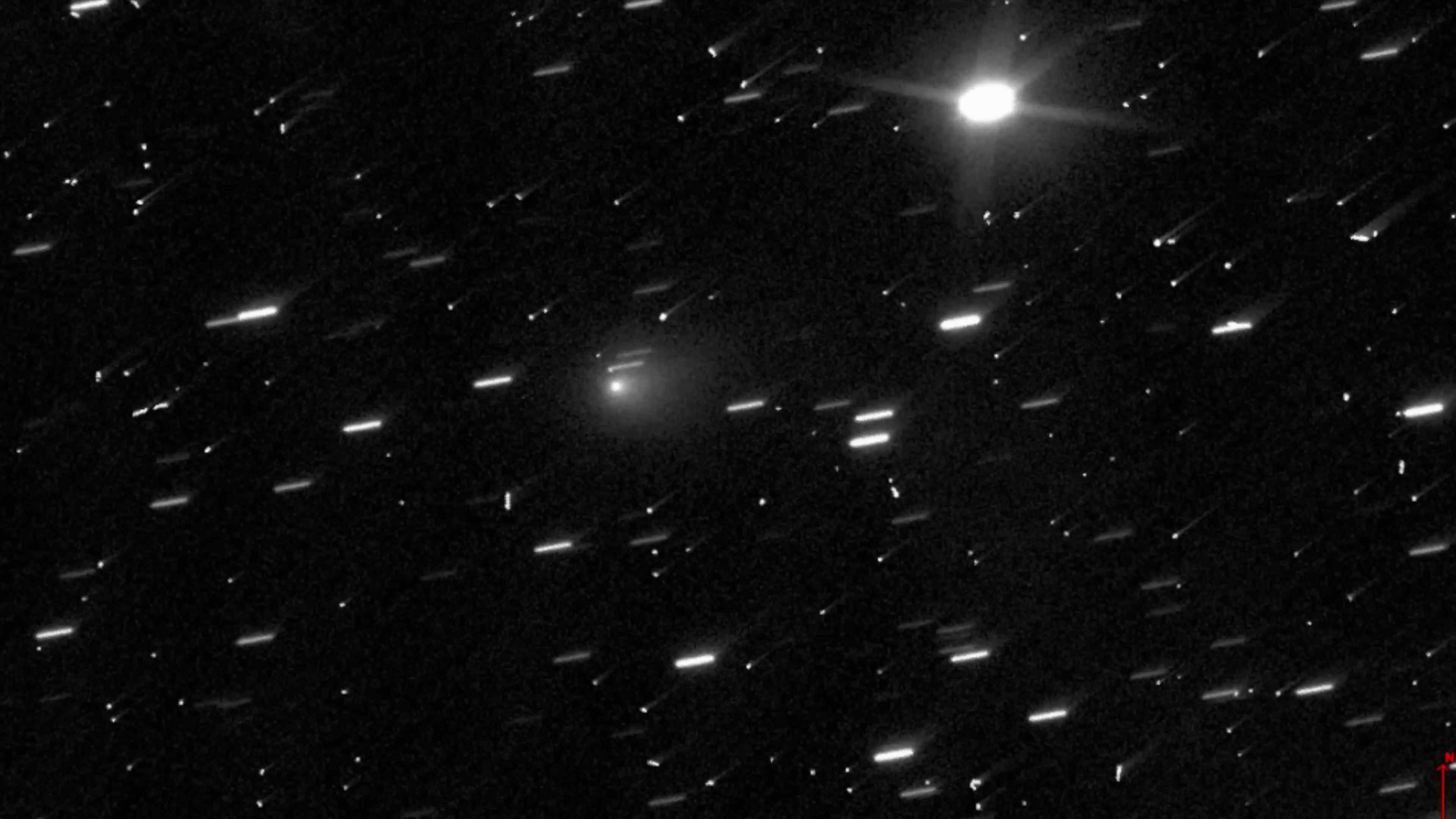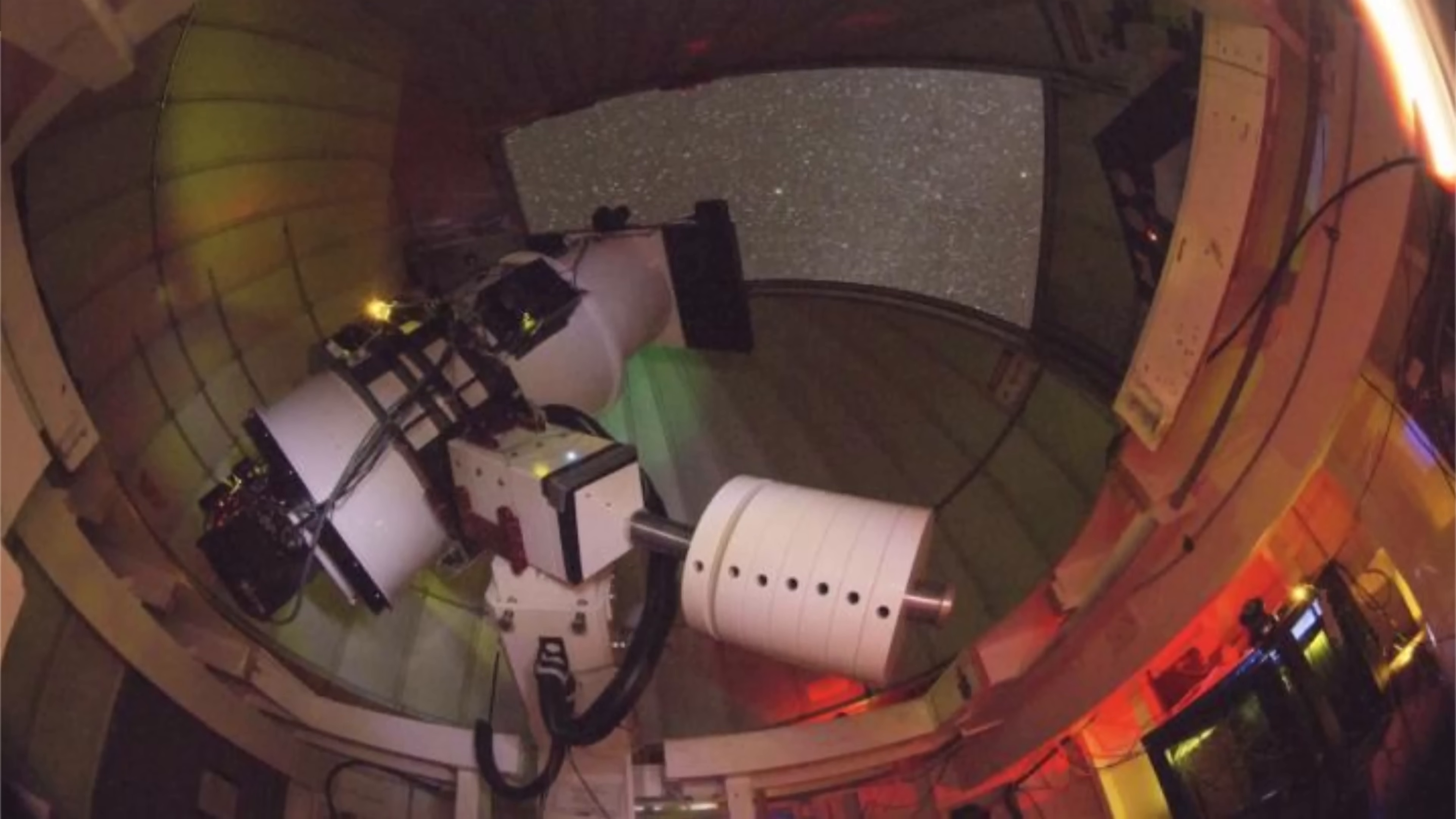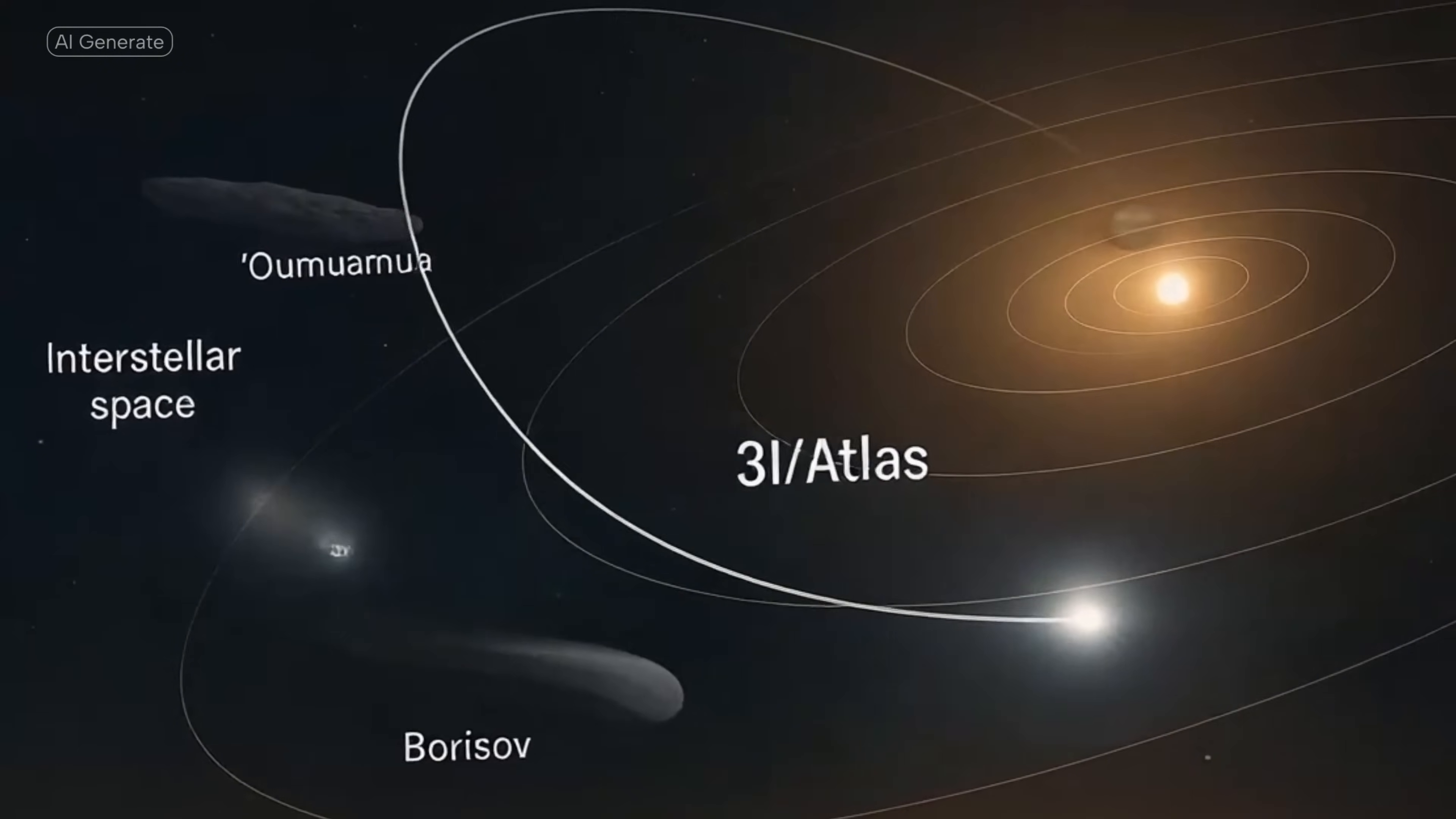This very question is at the heart of the entire mystery of this object, 3i Atlas. It really challenges our assumptions and opens up some fascinating and for some pretty controversial possibilities. So let's get the basics down first. What is this thing? And where did it even come from?